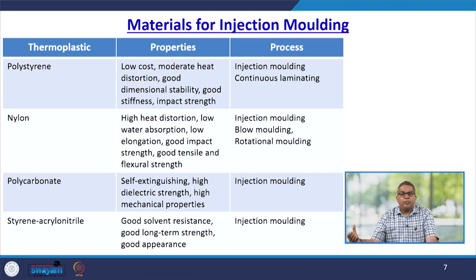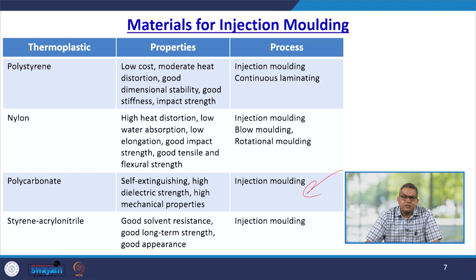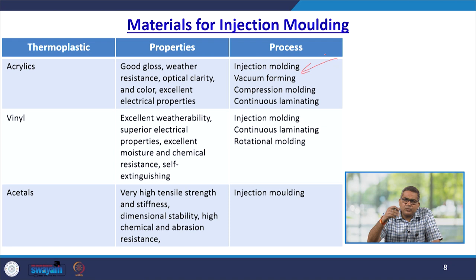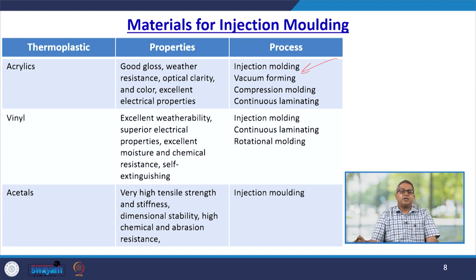Polycarbonate is a very common commodity plastic with self-extinguishing properties, high dielectric strength, and high mechanical properties — it can be injection moulded. Styrene acrylonitrile (SAN) has good solvent resistance, good long-term strength, and good appearance, and can be injection moulded. Acrylics have very good gloss, weather resistance, optical clarity, excellent colour and electrical properties — they can be injection moulded, vacuum formed, compression moulded, or continuously laminated.